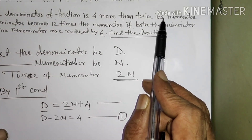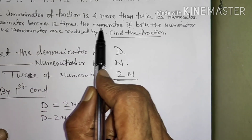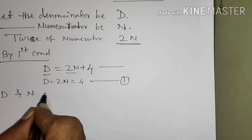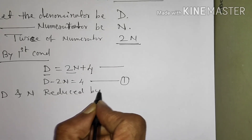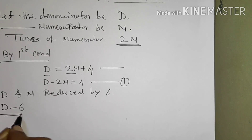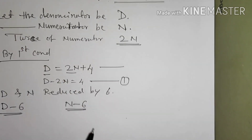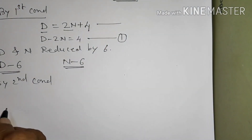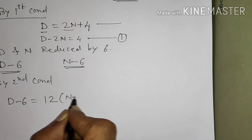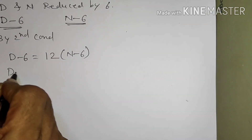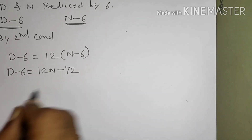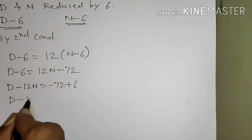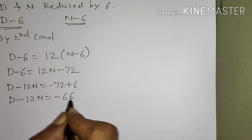Now, second condition: the denominator becomes 12 times the numerator if both the numerator and denominator are reduced by 6. If D and N are reduced by 6, that is D minus 6 and N minus 6. So we get D minus 6 equals 12 times (N minus 6), giving D minus 12N equals minus 72 plus 6.